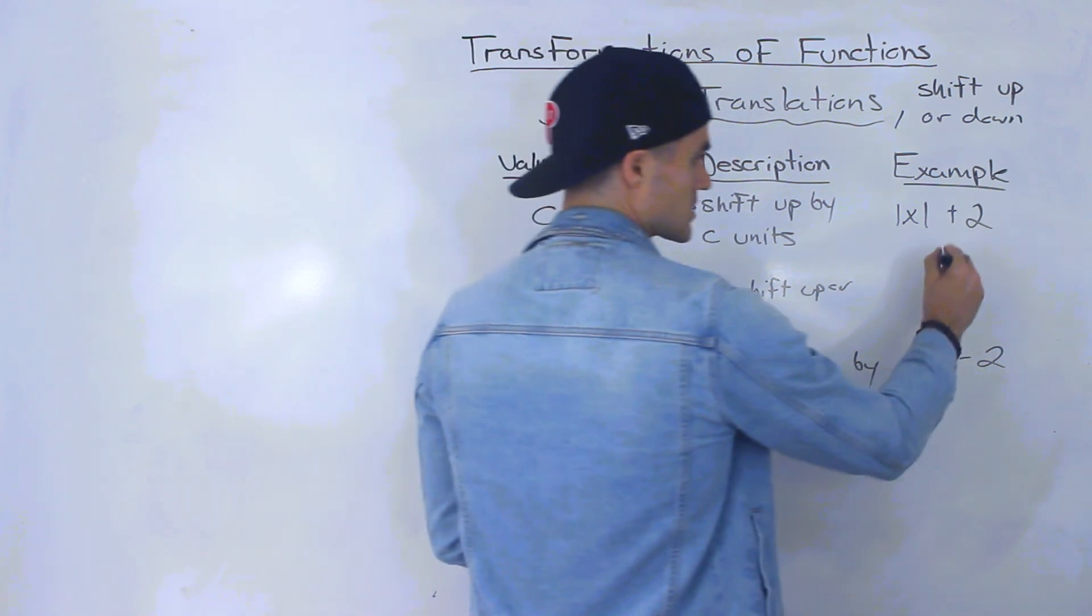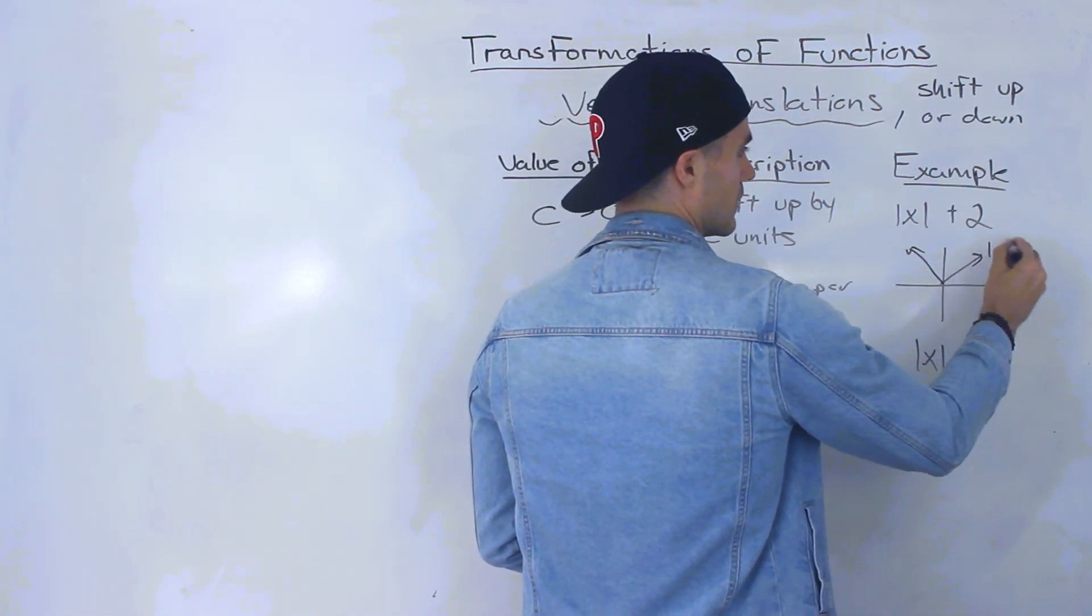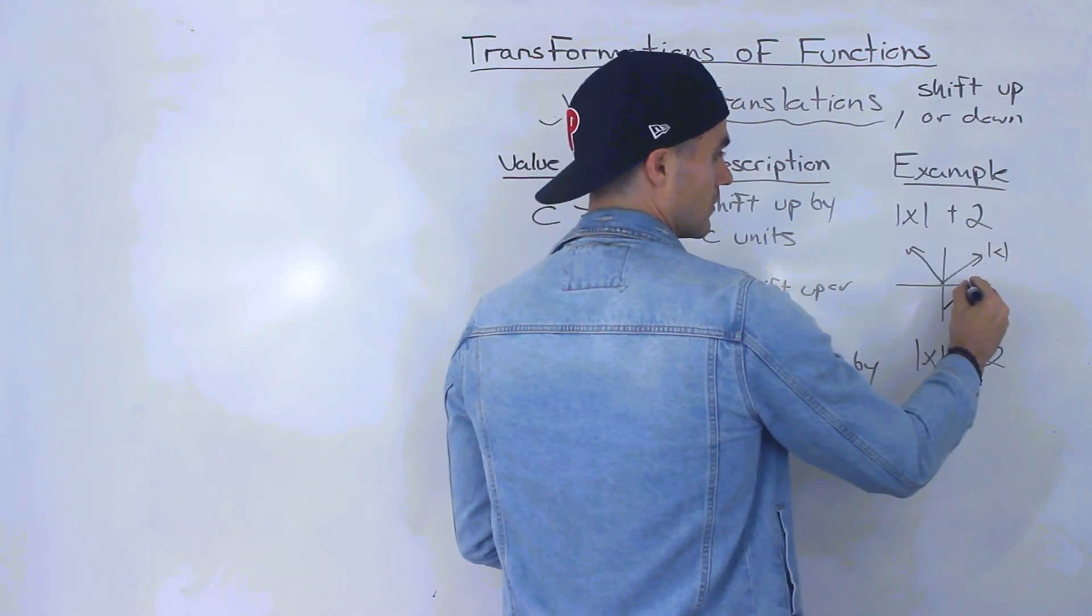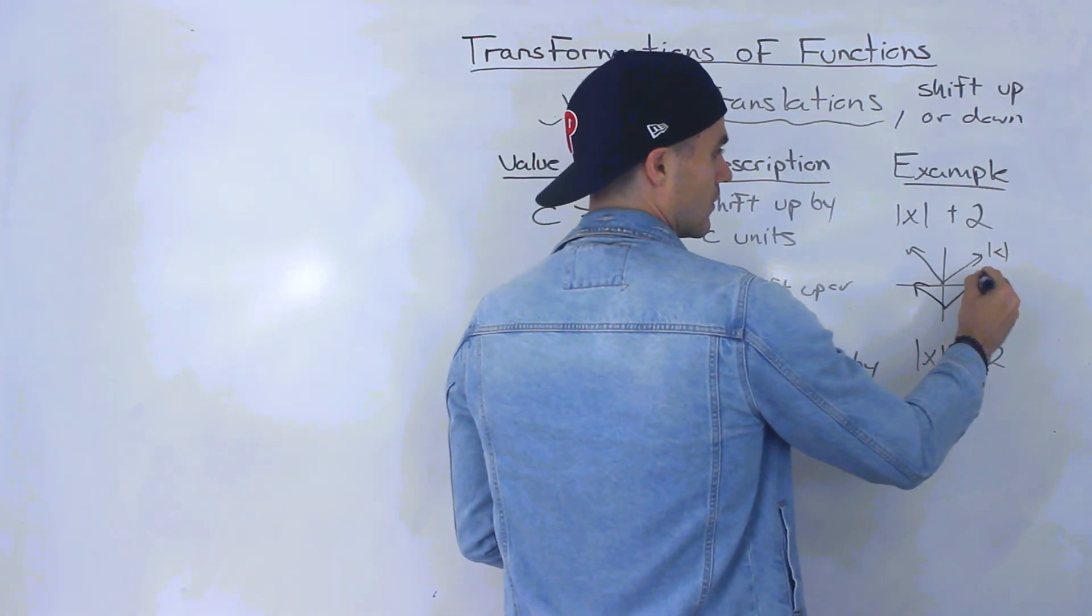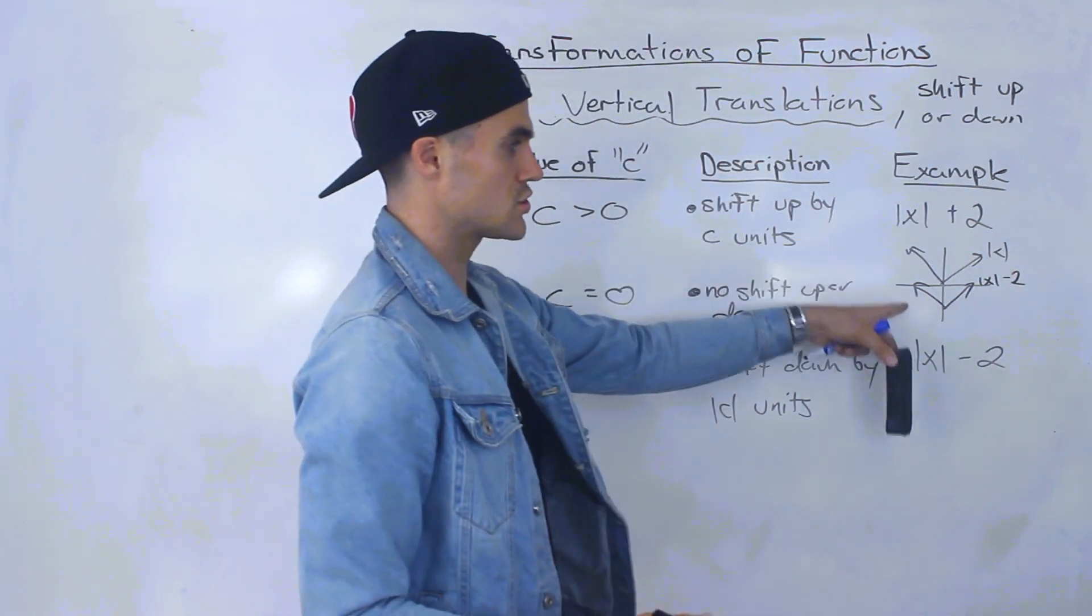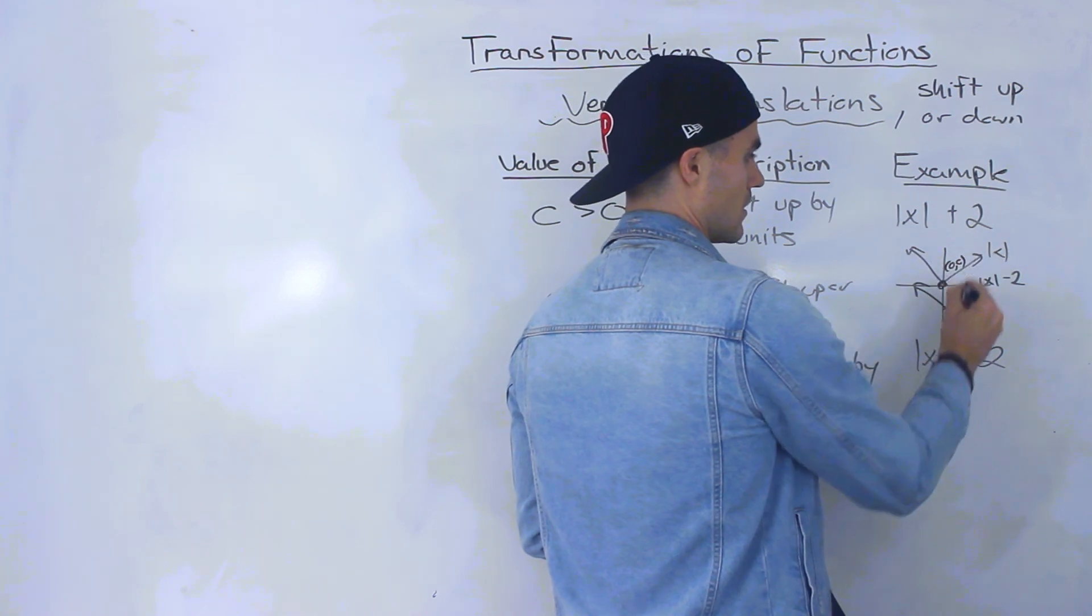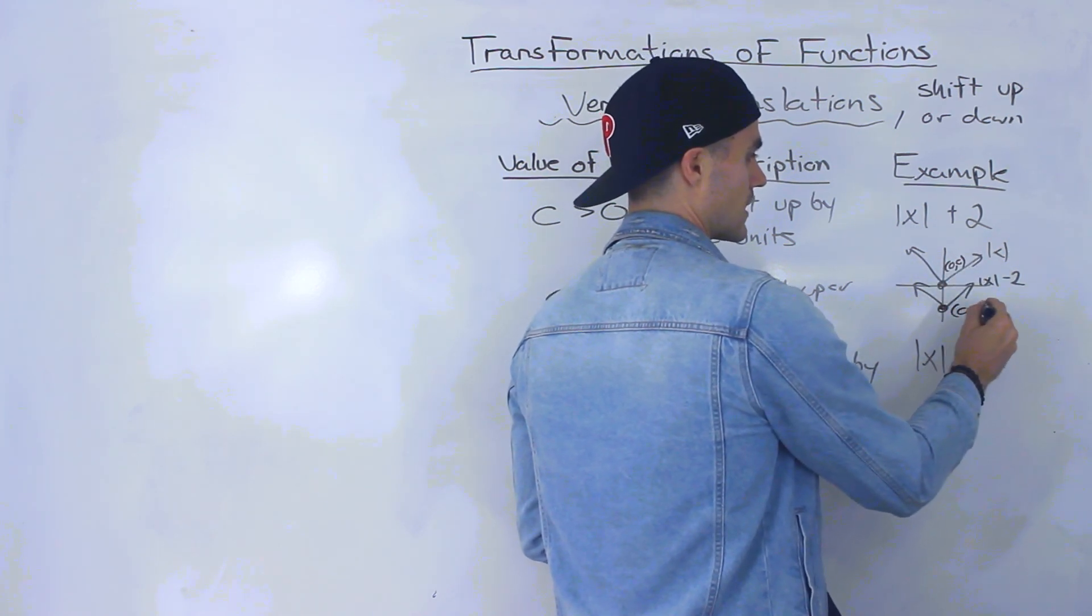So the way that looks is if we have the absolute value of X, well, if we take it and shift it down, it looks like that. Right, just took this, shifted it down by two units. So this is at zero and zero. And then this here is at zero and negative two.